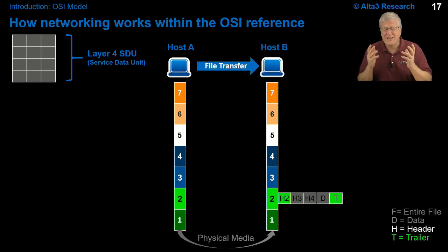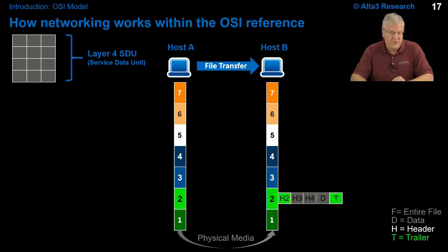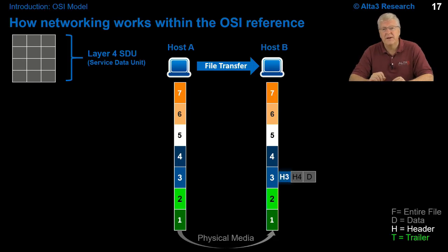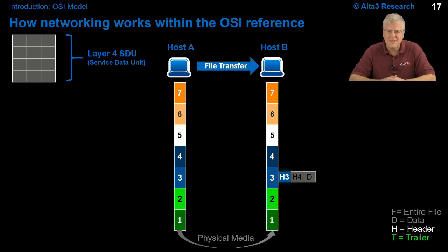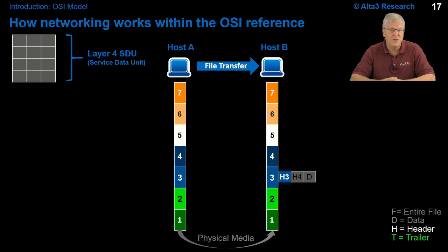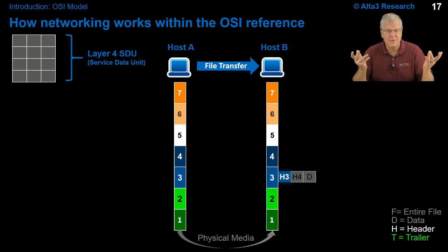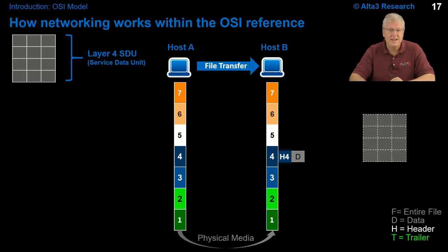Assuming everything checks out fine, we reach into that frame, yank the packet out, and pass it up to layer 3. At layer 3, the work is to ask: is this destination IP address me? If the answer is yes — which in our story it is — then we reference a port address, which is the address of the specific layer 4 process to contact. The packet is disassembled, the segment is yanked out, and passed up to the proper port at layer 4.